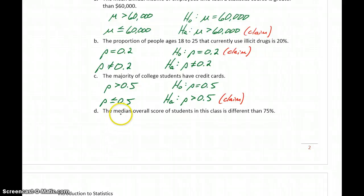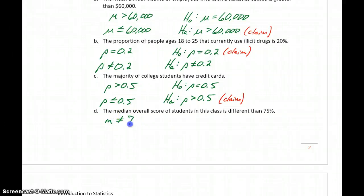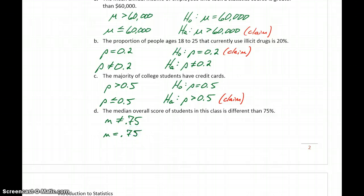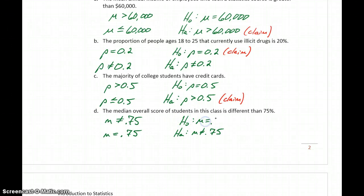One last example of setting up these hypotheses: the median overall score of students in this class is different than 75%. We're talking about the median, so our parameter is M, and we're saying it's different than 75% — it could be smaller or larger — so we use a not-equal-to symbol. The median is not equal to 0.75. The negation is that the median is exactly 0.75. So our alternative hypothesis is that the median is not 75%, the null is that the median is exactly 75%, and again it's the alternative that matches the original claim.